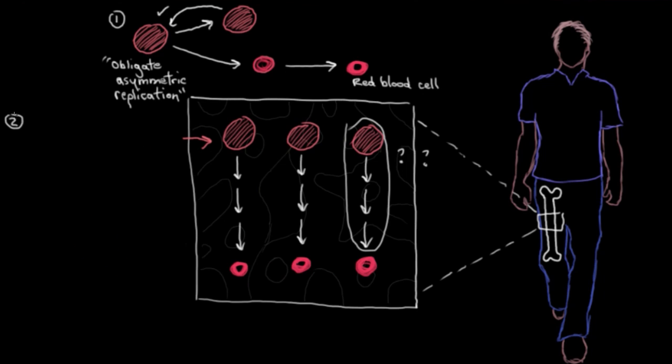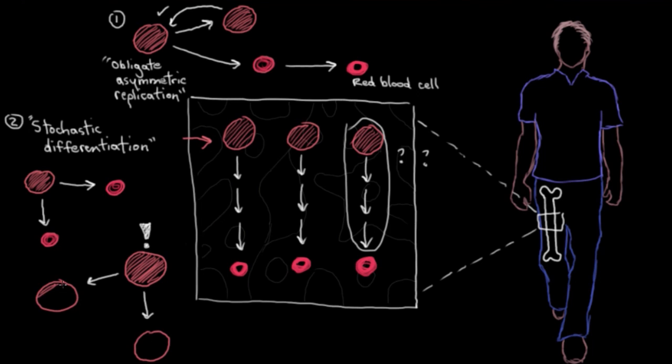The other mechanism is called stochastic differentiation. So if one stem cell happens to differentiate into two daughter cells, instead of a mother and a daughter, another stem cell will notice this and makes up for the loss of the original stem cell by undergoing mitosis and producing two stem cells identical to the original. So these two mechanisms make sure their numbers remain nice and strong.